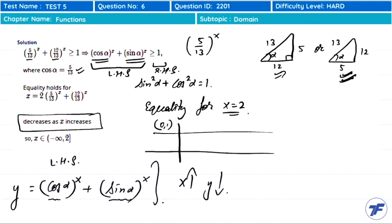So y is decreasing. This means what we want - LHS greater than or equal to RHS - will only happen when x ≤ 2, because equality comes at x = 2. Below 2, for example...